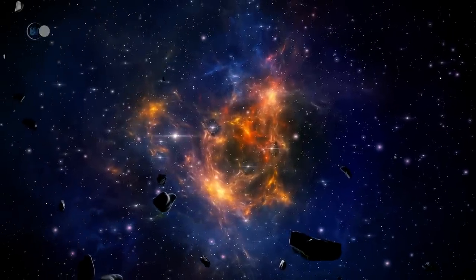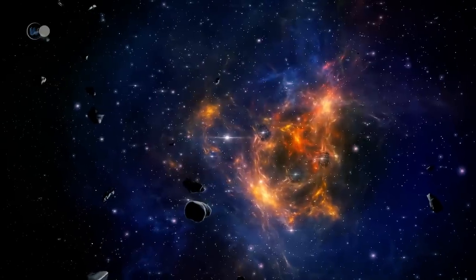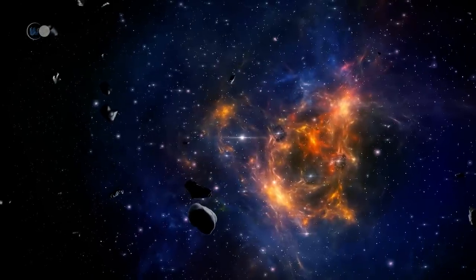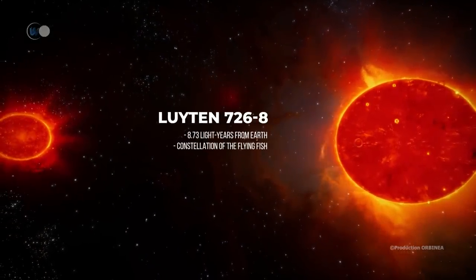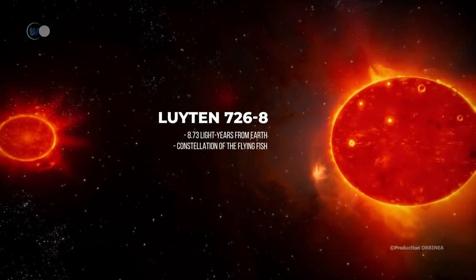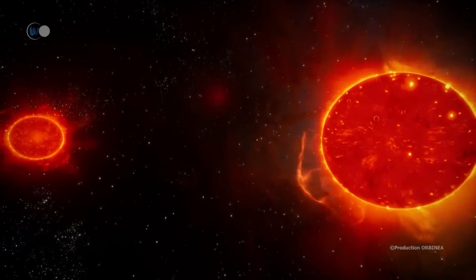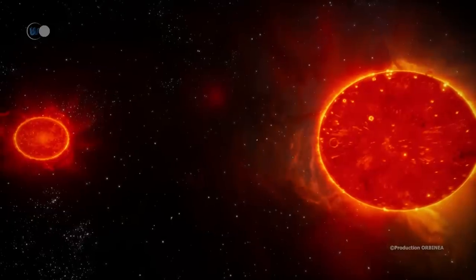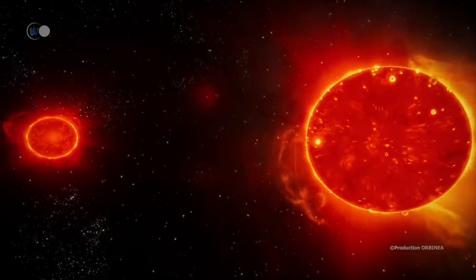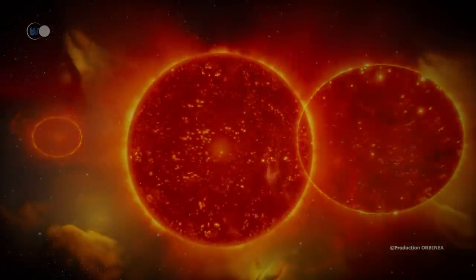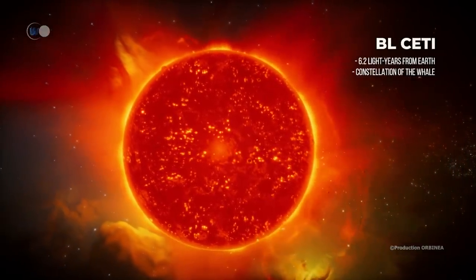At almost the same distance from our Sun, another stellar duo awaits us. Let's join, at 8.7 light-years from our solar system, Luyten 726-8, a binary system hosting two stars, BL Ceti and UV Ceti. They are once again two M-type red dwarfs, probably younger than our solar system. With a low luminosity, they are not visible to the naked eye. This is why they were only discovered in 1948.